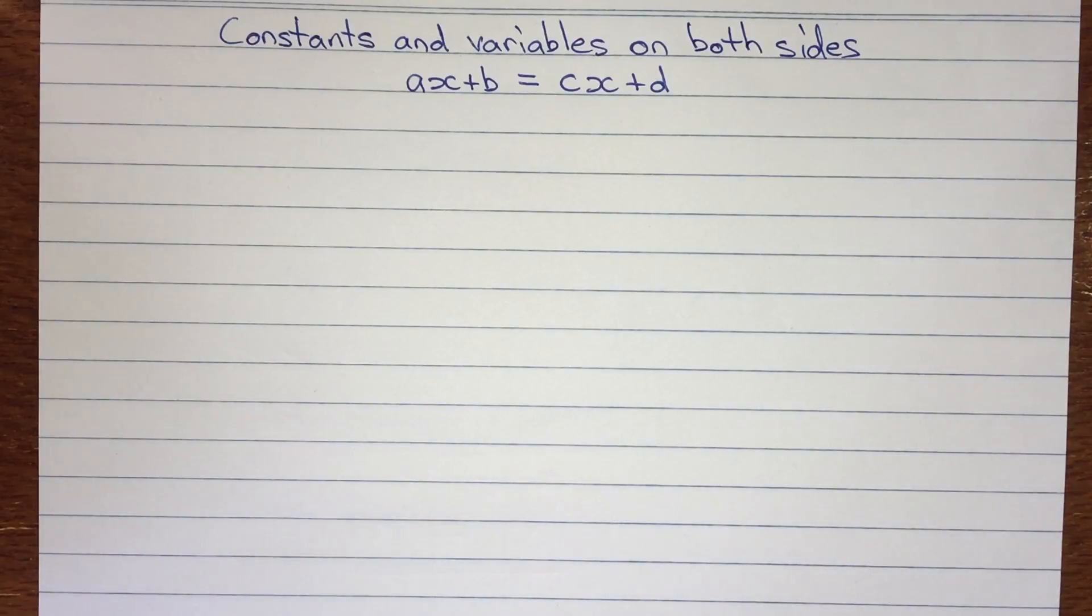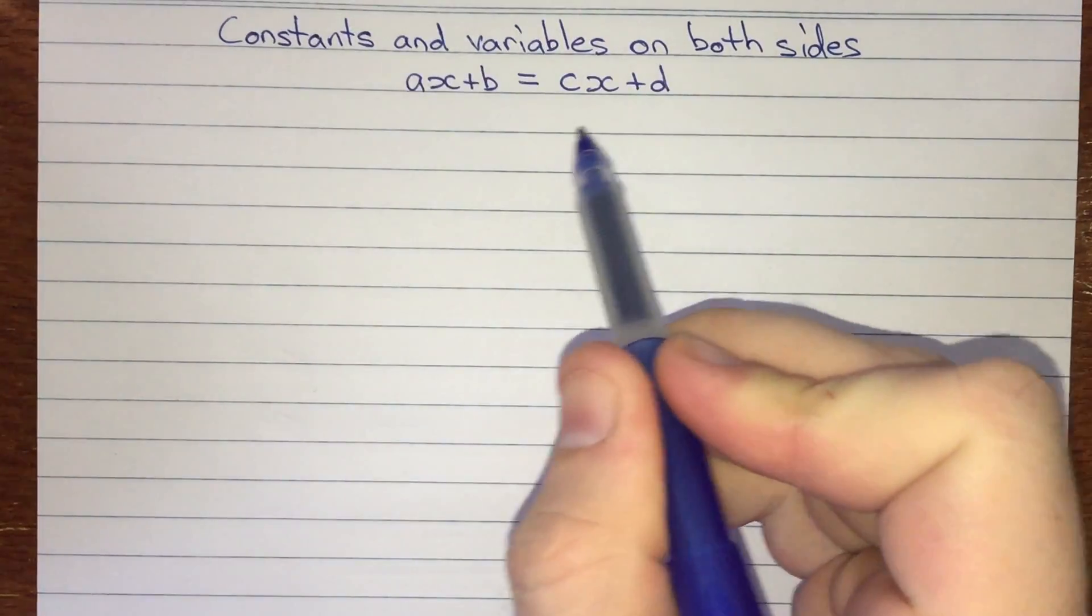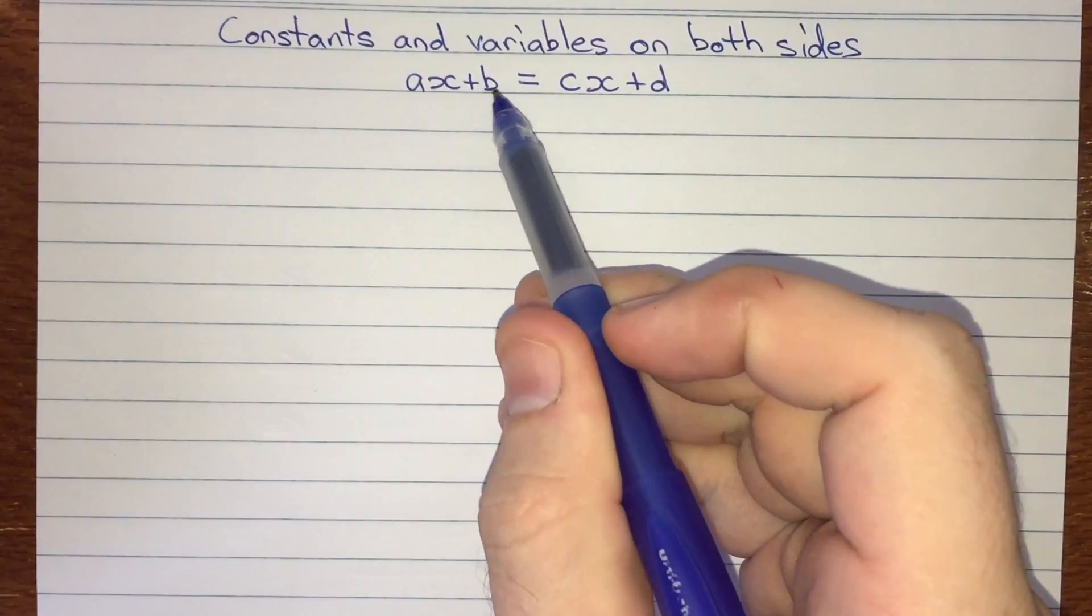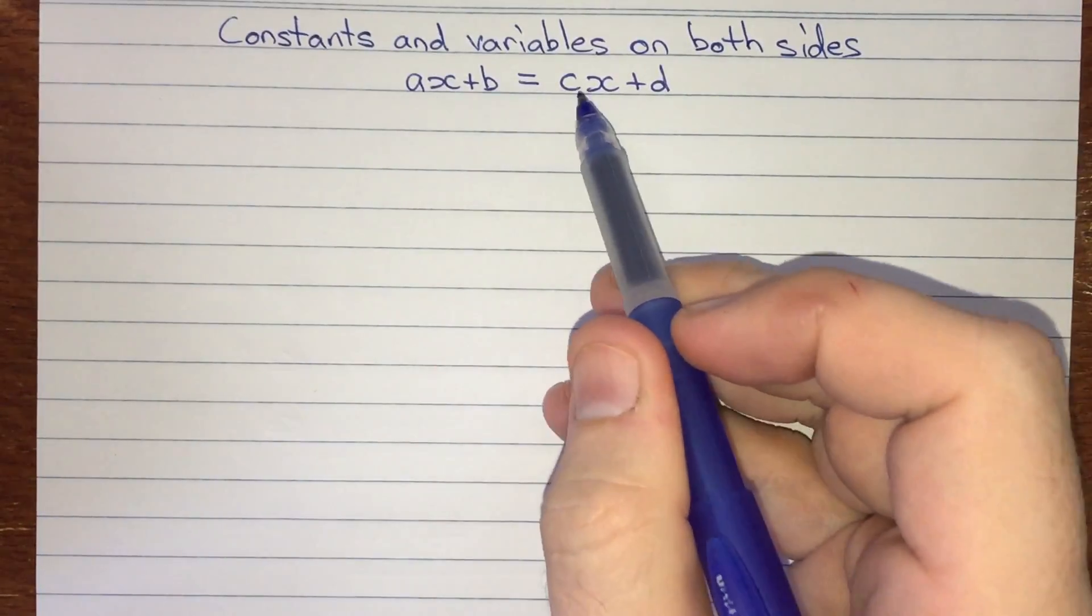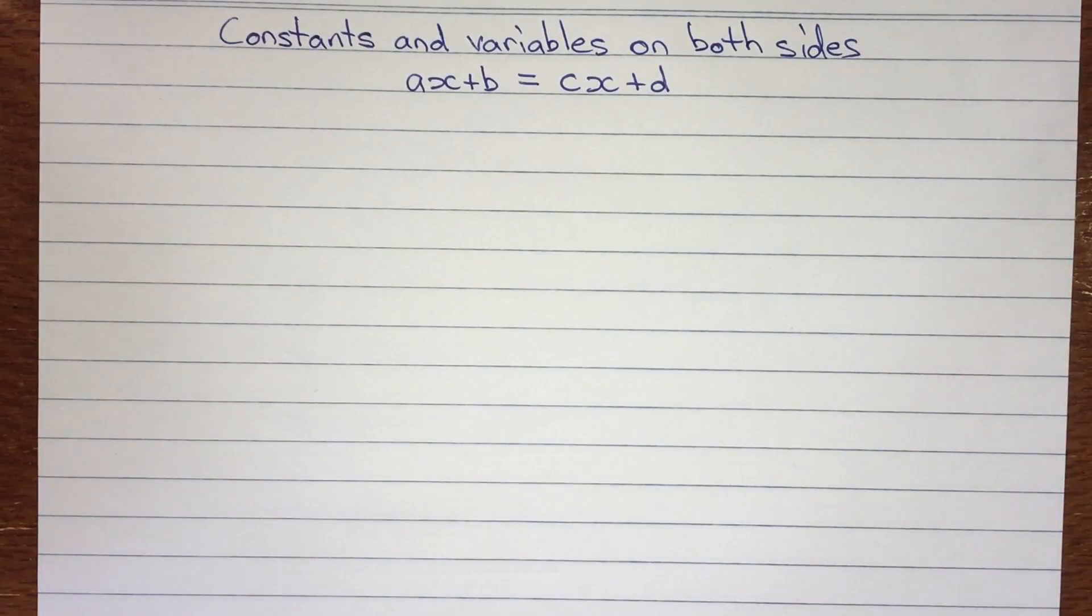Let's look at how we deal with the situation when we've got constants and variables on both sides of the equation. In a general mathematical way of writing that, we'd say something like ax plus b is equal to cx plus d, where a, b, c, and d are all constants, and x is the variable that we're solving for.